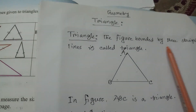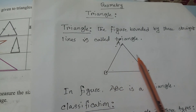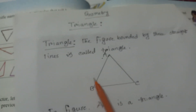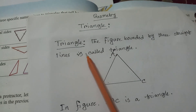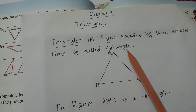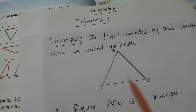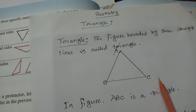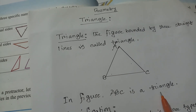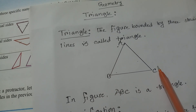Dear students, today we will discuss about Triangle. Look at the picture. Triangle — the figure bounded by three straight lines is called a Triangle. In the figure, A, B, C — this figure is called a Triangle. Here, three sides: AB, BC, and CA.